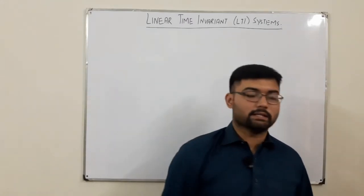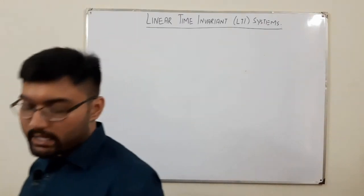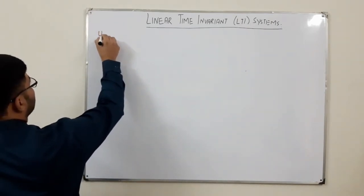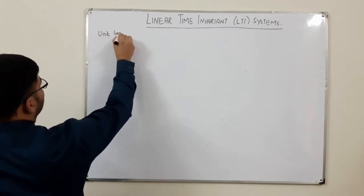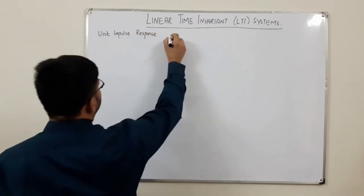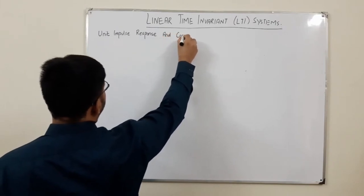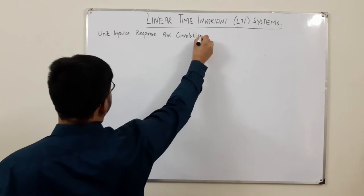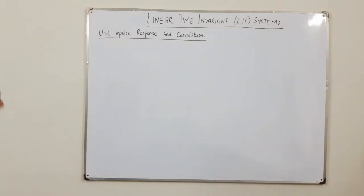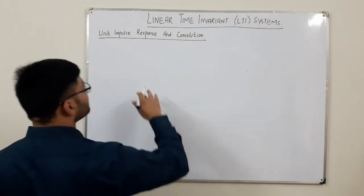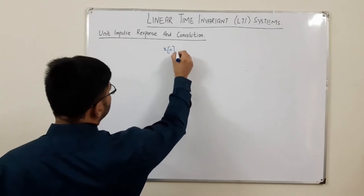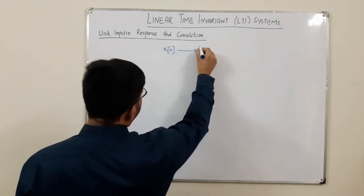Bismillah ar-Rahman ar-Rahim. Assalamu alaikum. Salah Ar-Khan here, and today we cover the next topic of chapter two: the unit impulse response combined with convolution. Convolution is the major topic of the chapter. We are studying discrete-time LTI systems, so if you have an input X of n and provide it to your LTI system, the output of the system would be Y of n.